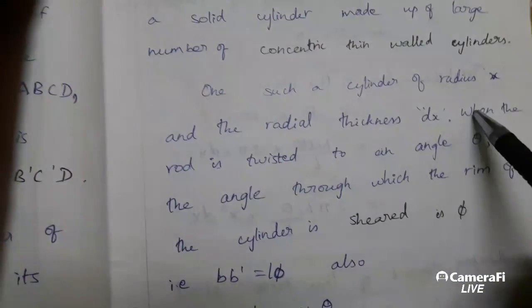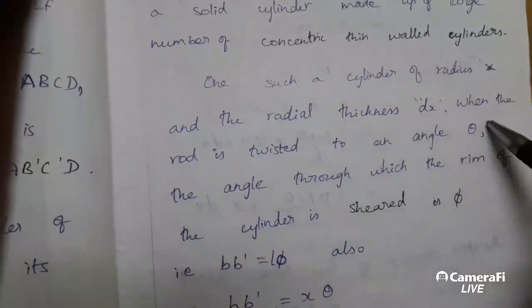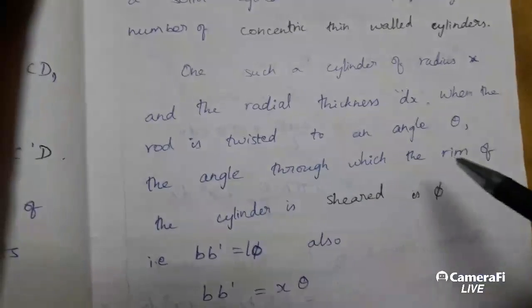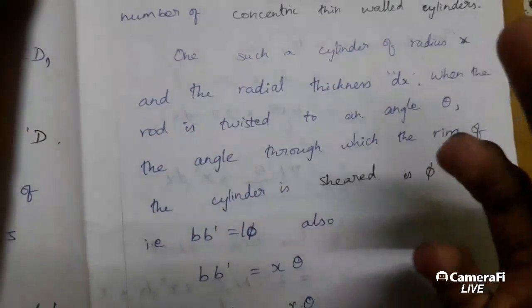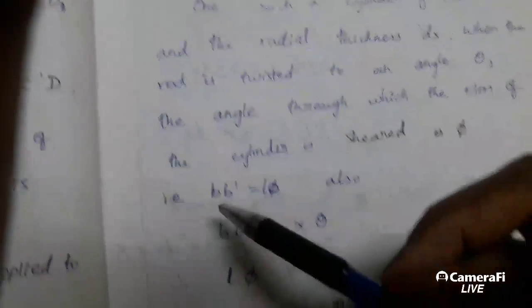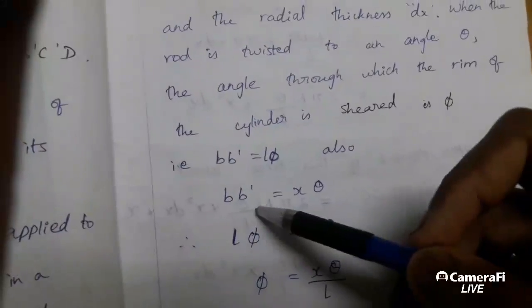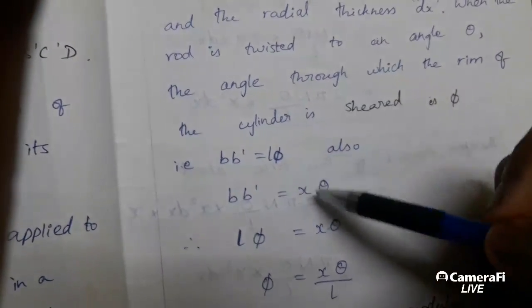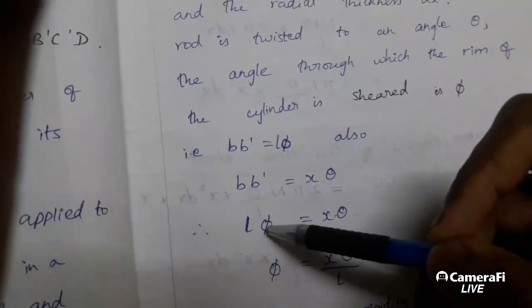Once a cylinder of radius X and the radial thickness DX, when the rod is twisted to an angle theta, the angle through which the rim of the cylinder is sheared is phi. That is, B B prime is equal to L phi. Also, B B prime is equal to X theta. Then equating these two equations, L phi equals X theta, then phi equals X theta by L.